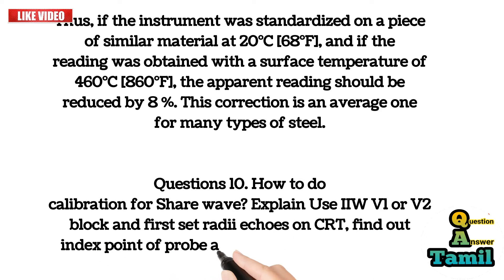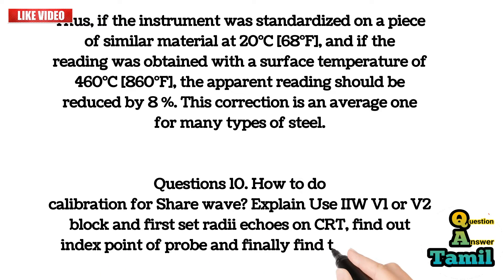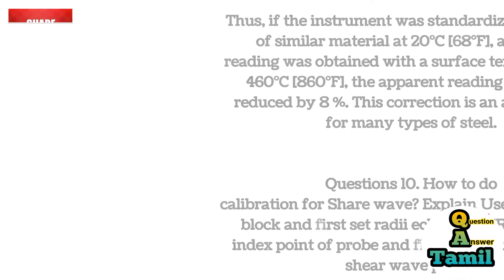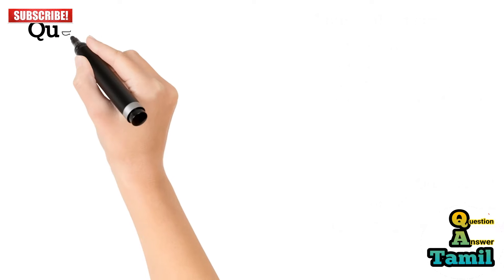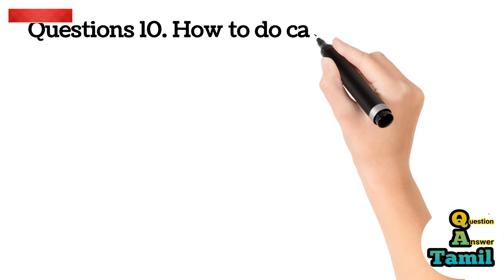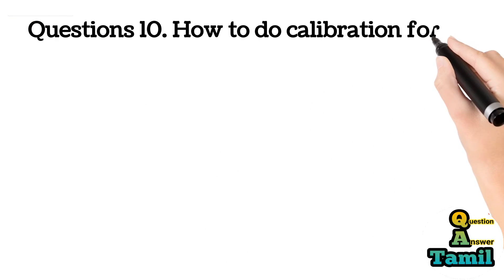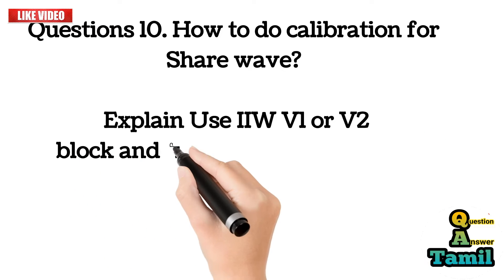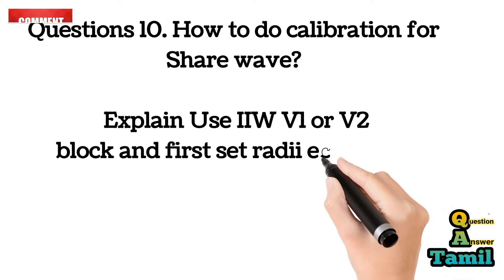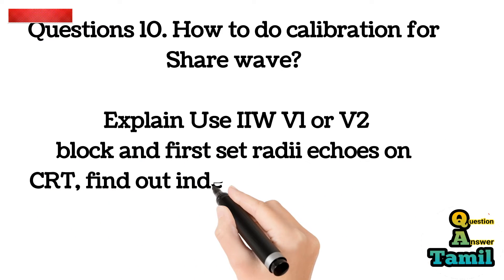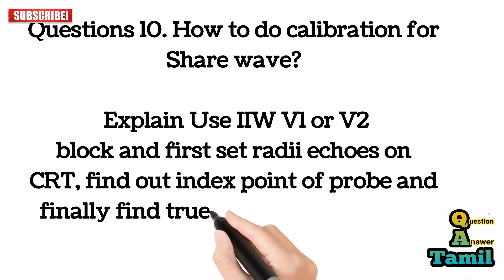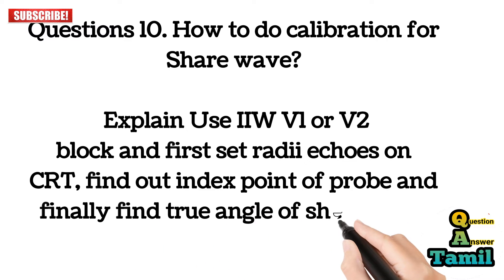Question 10: How to do calibration for shear wave? Use IIW V1 or V2 block. First, set radii echoes on CRT, find the index point of the probe, and finally find the true angle of the shear wave probe.